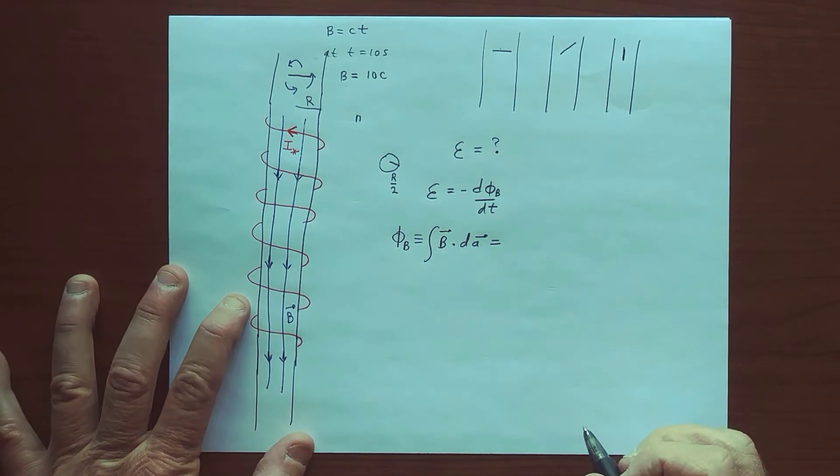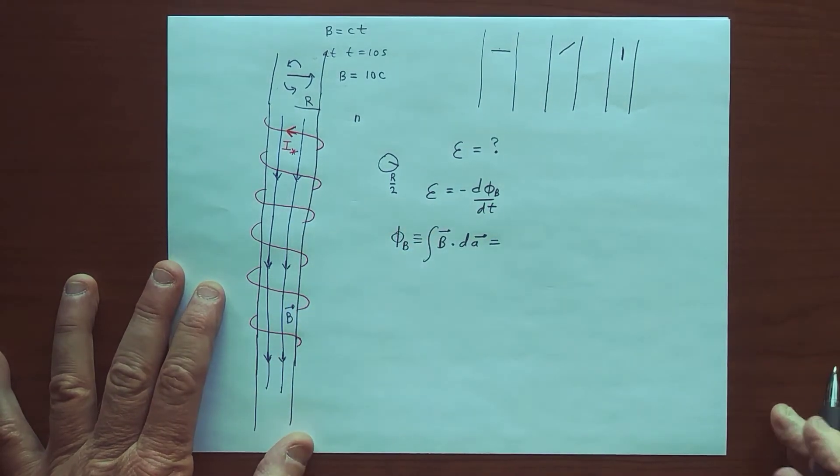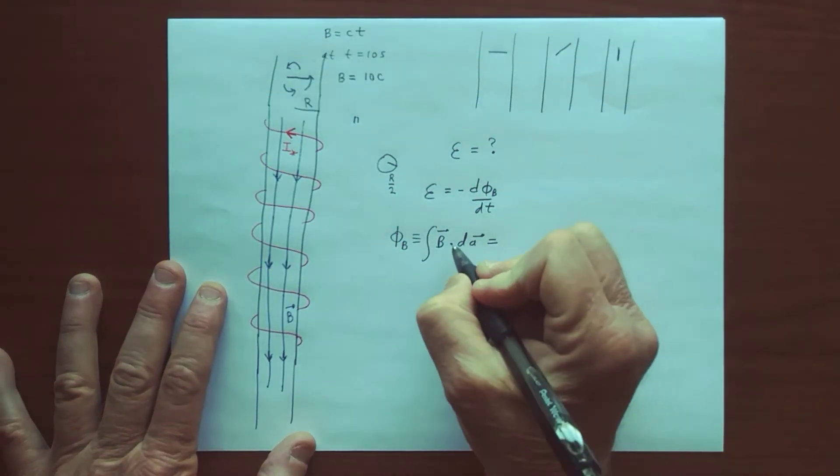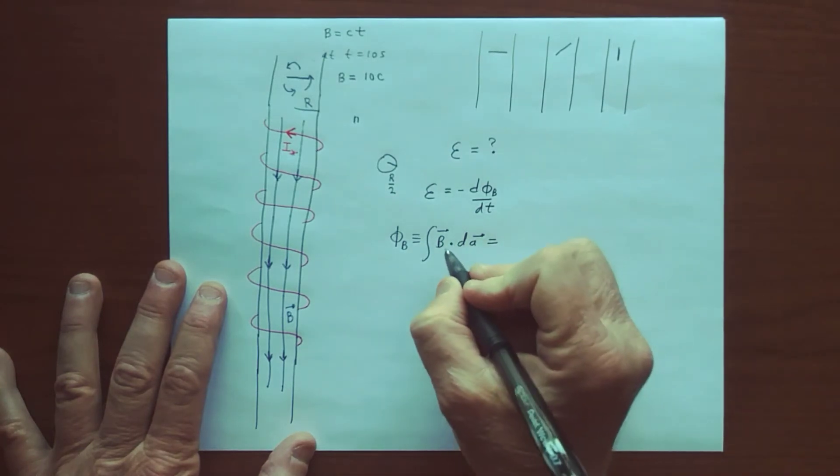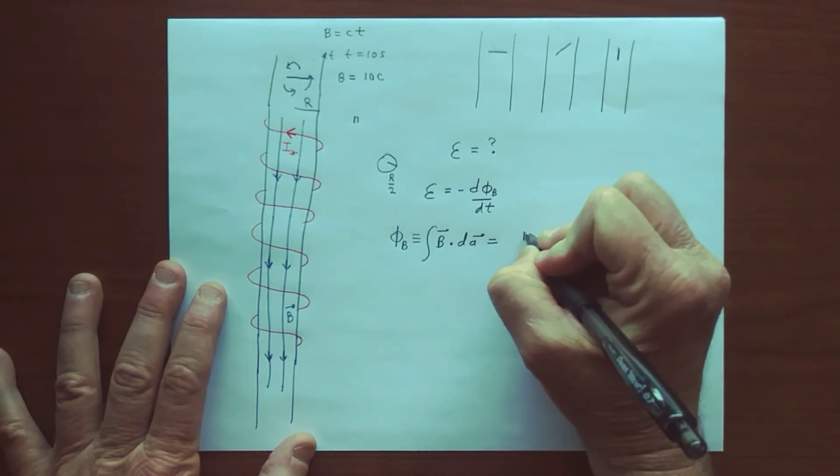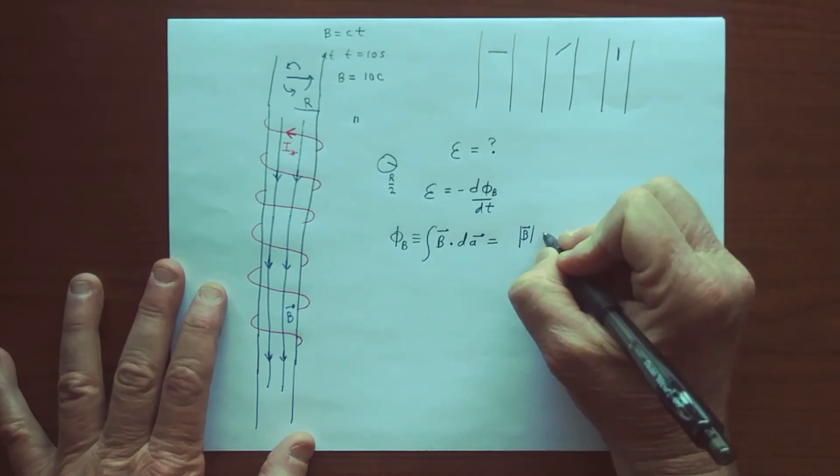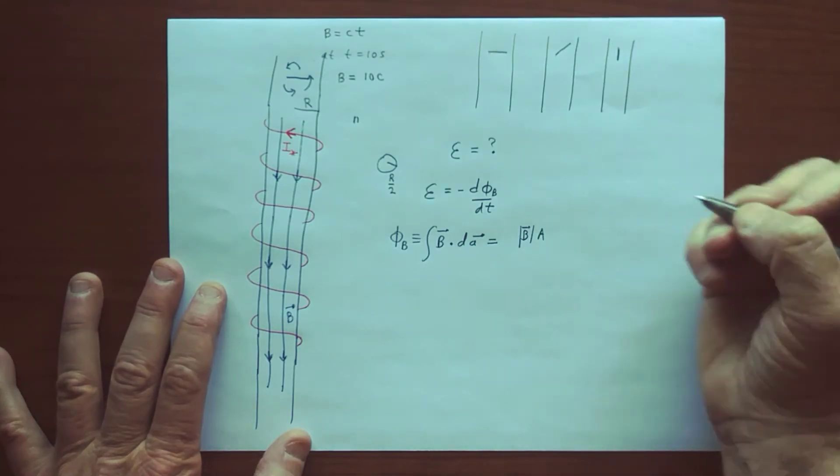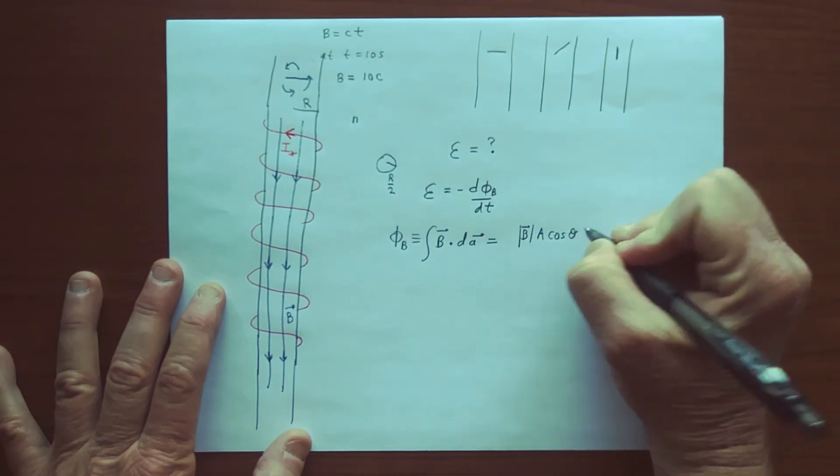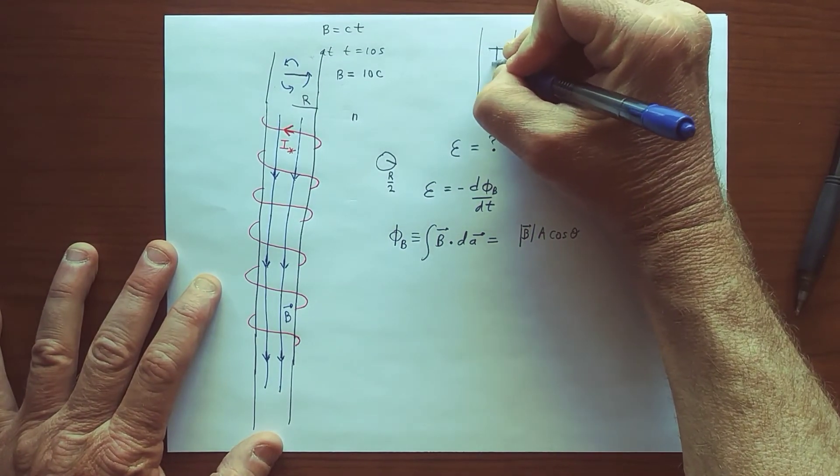And so the key here, the key issue here, is that the magnitude of the magnetic field is constant, the area of the coil is constant—it's pi times the radius squared—but it's the dot product that's changing. So we get B, the magnitude of B, which we can find out, times the magnitude of the, well, times the area, which is just some positive quantity, times the cosine of the angle between the two. But that angle is changing.